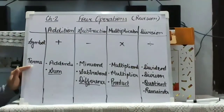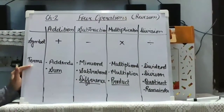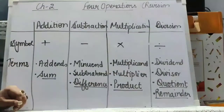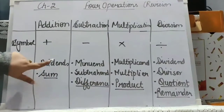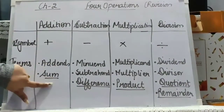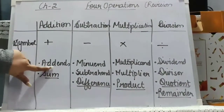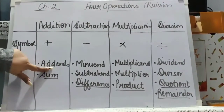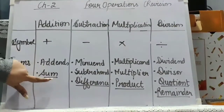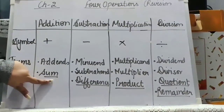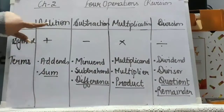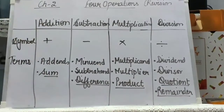Then we have studied the terms related to these 4 operations. There are 2 terms of addition: addends and sum. Addends are the numbers that will be added, and the sum is the outcome — or we can say the result — of the addition.